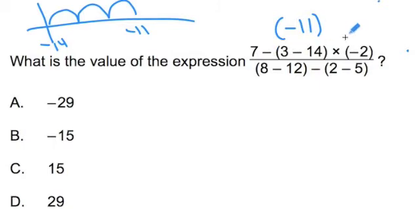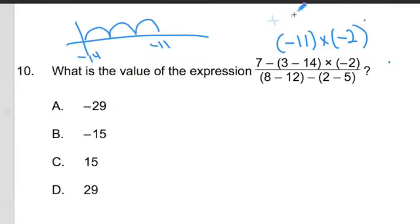Now am I going to do subtraction or multiplication? Because PEMDAS, I'm going to do multiplication. Negative 11 times a negative 2. Well, this is a negative and this is a negative. So I've got to remember when I have a negative times a negative, it's going to get me a positive. So this is going to be a positive 22.